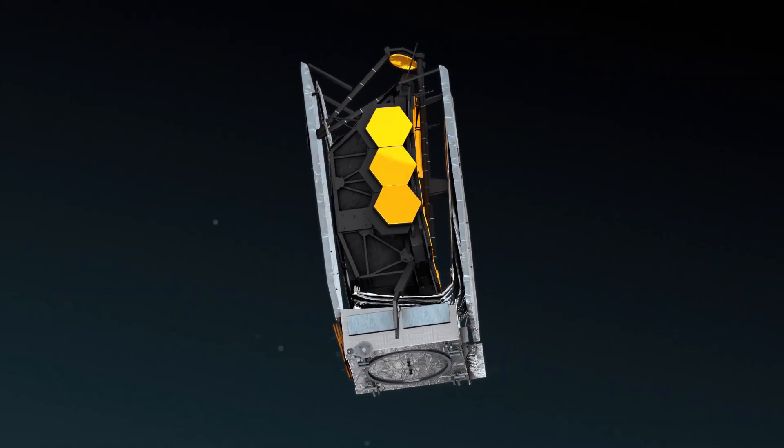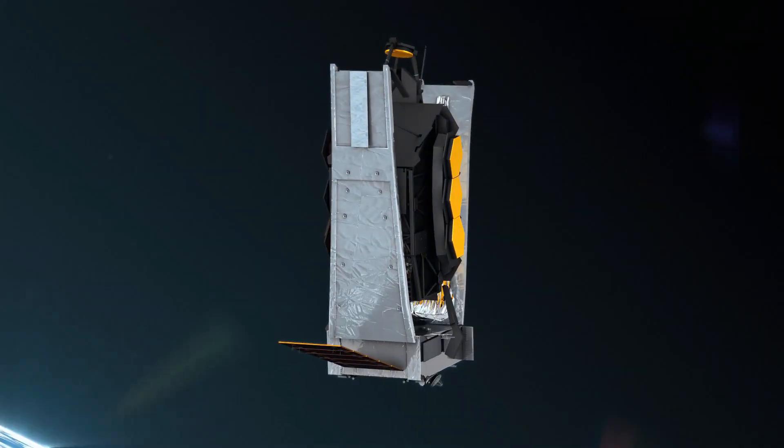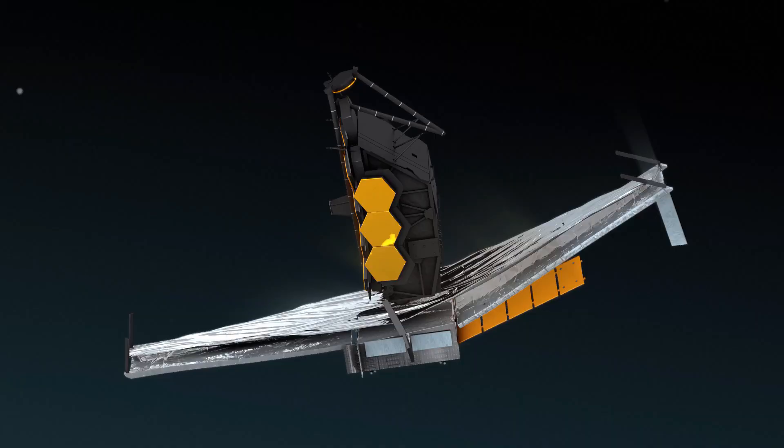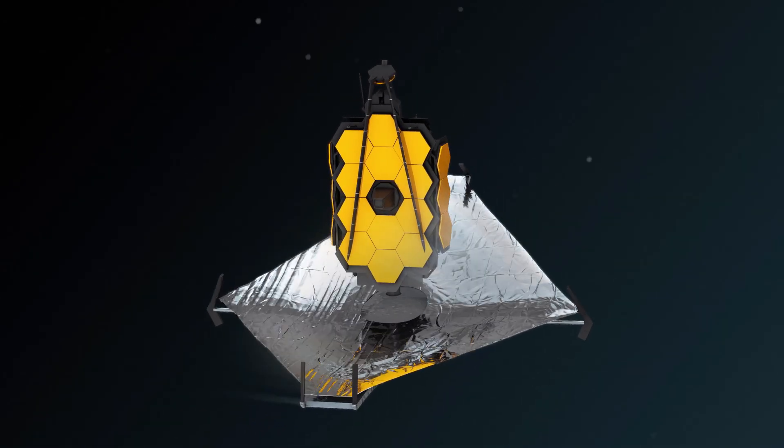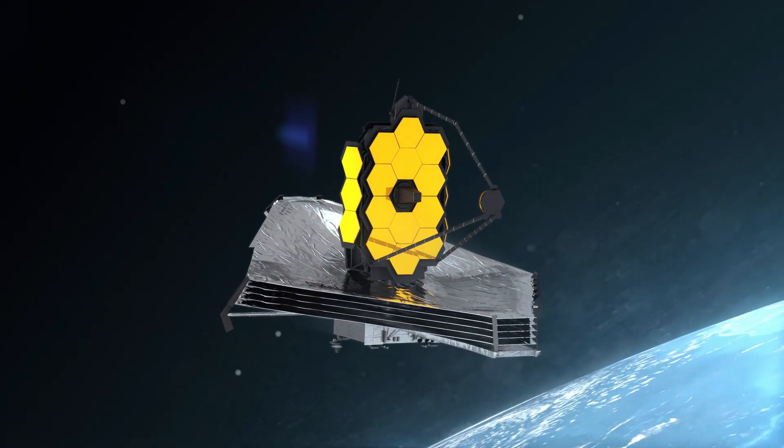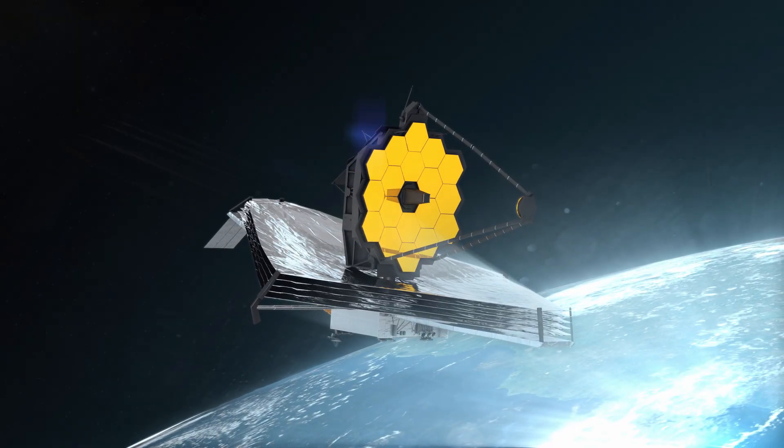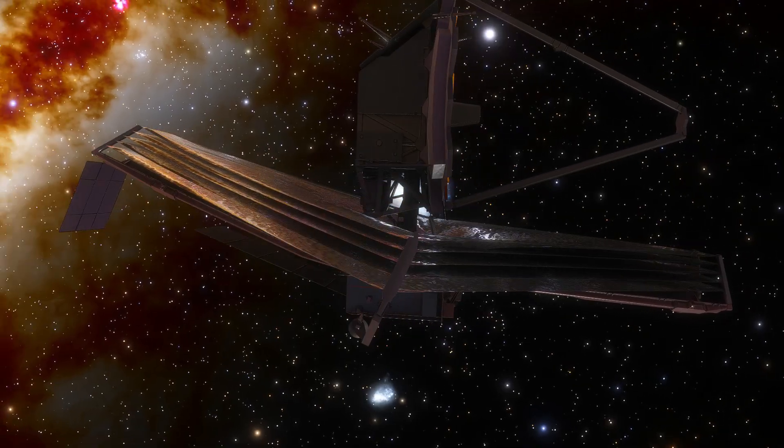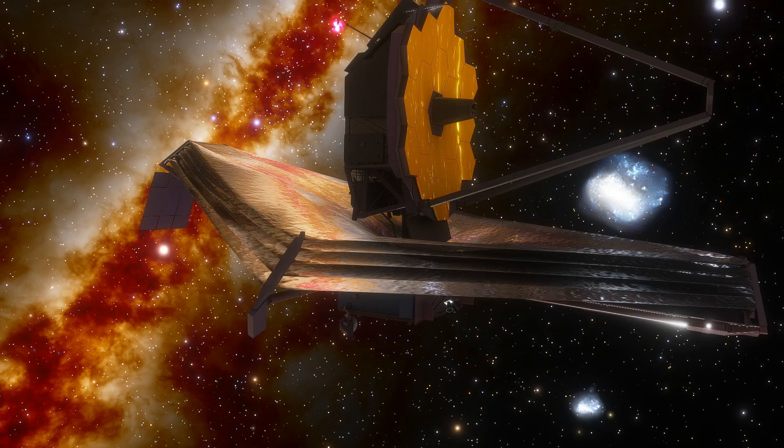The James Webb Space Telescope promised to be a beacon of discovery, to shine a light into the vast darkness of space. It promised revelations beyond anything we had ever known. And not only did it deliver, it shattered every expectation. In just a few short years, this remarkable machine has rewritten our understanding of the universe. These are the remarkable discoveries of the James Webb Space Telescope.